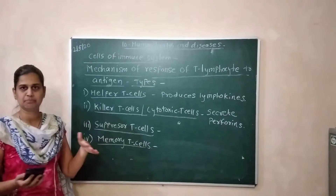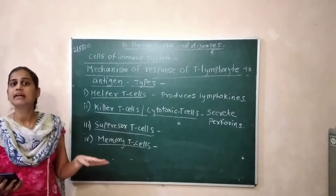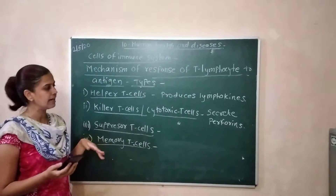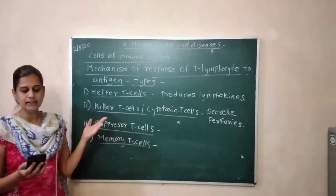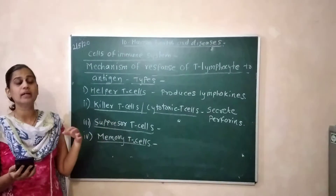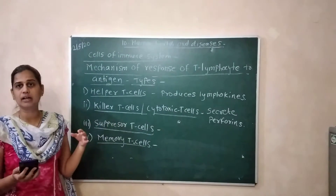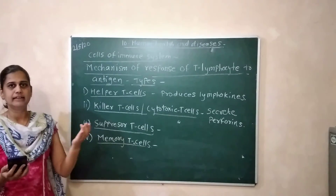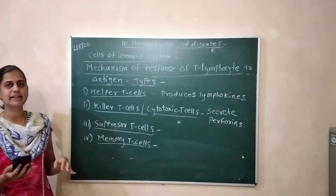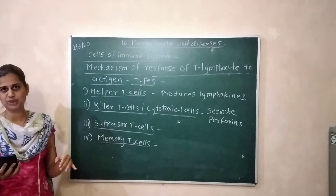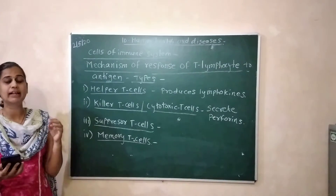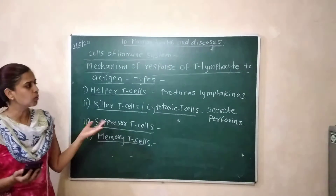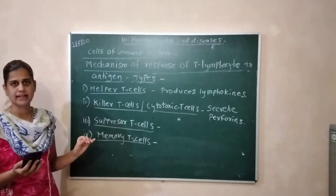Killer T-cells or cytotoxic T-cells directly attack and destroy invading microbes, infected body cells, or cancer cells. They directly attack and destroy infected cells, cancer cells, and microbial cells.